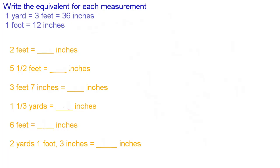We have 2 feet here and we know that 1 foot equals 12 inches. So you just add 12 and 12 together. 2 and 2 is 4, 1 and 1 is 2. So that's easy enough, 24 inches.